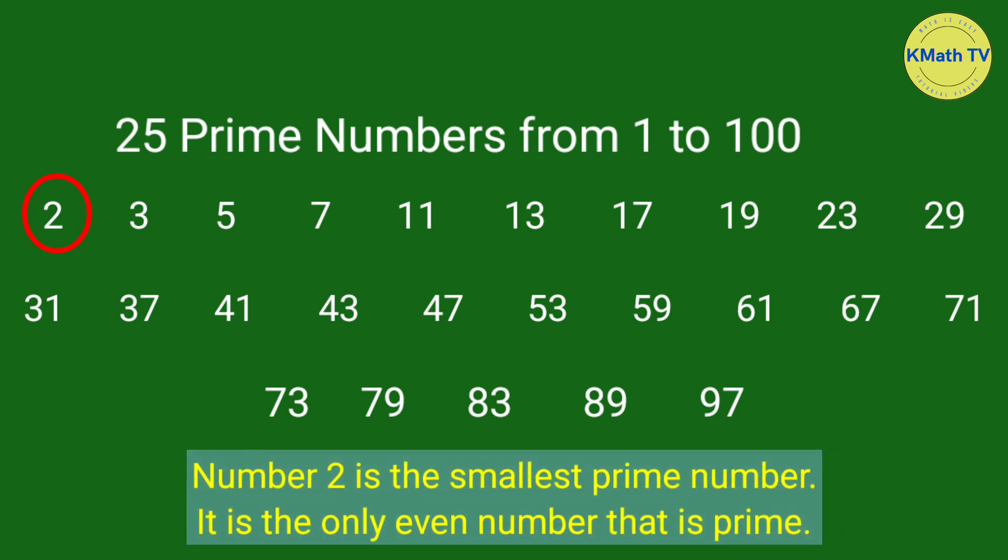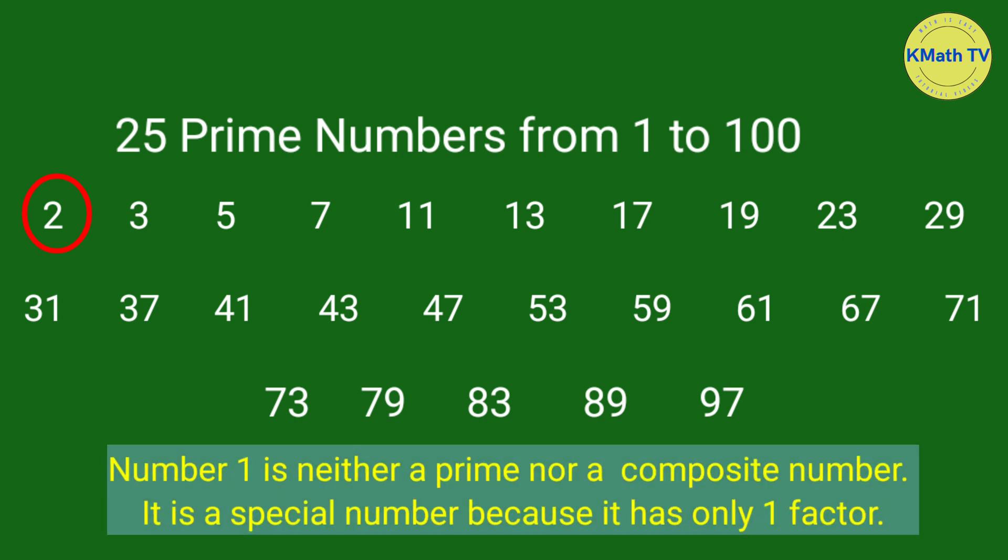2 is the smallest prime number. It is the only even number that is prime. Number 1 is neither a prime nor a composite number. It is a special number because it has only one factor.